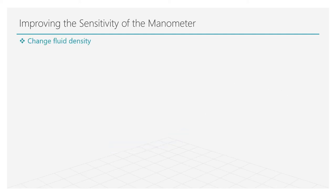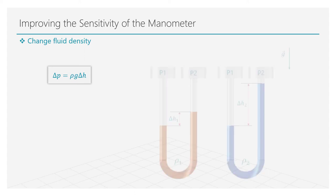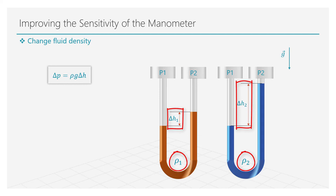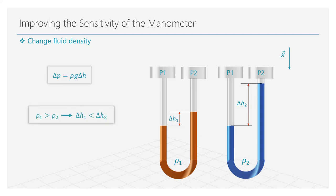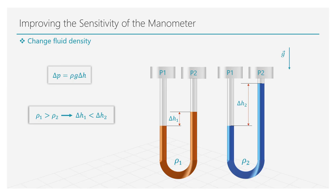Another approach is to simply change the density of the fluid. Recalling that the pressure variation between two locations is proportional to the liquid density, the gravitational acceleration, and the fluid height difference, we can change the fluid density to have a better resolution of small pressure variations. For the same pressure variation, a denser fluid will have a smaller height change than a less dense fluid.